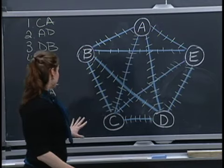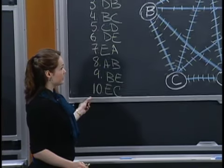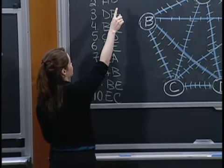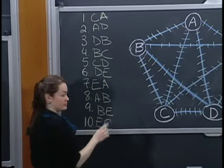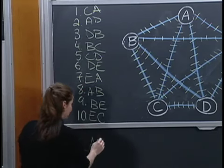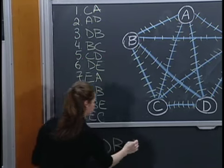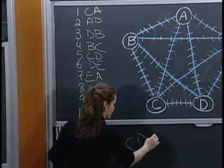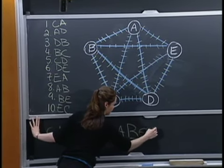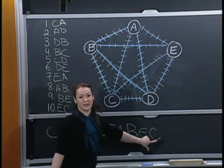We've crossed all of our arcs. The main thing to do now is write down what the actual path was. From the top: C to A, then A to D, D to B, B to C, C to D, D to E, E to A, A to B, B to E, E to C. That is our tour. Notice we started at C and ended at C.